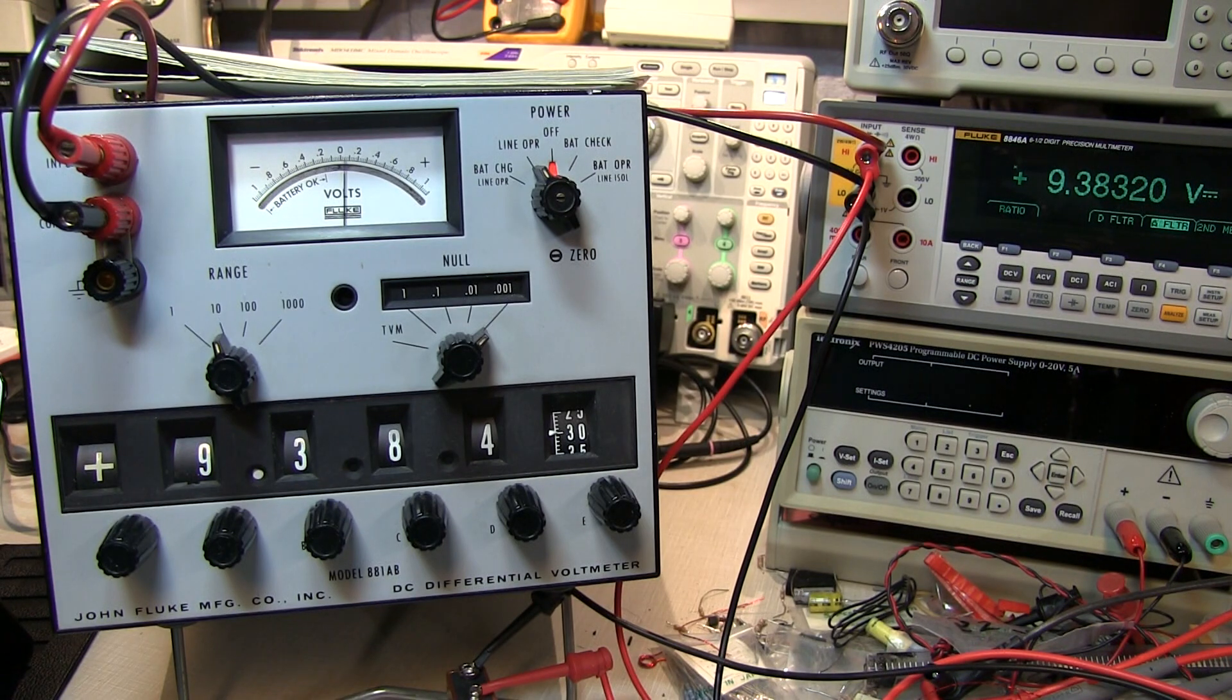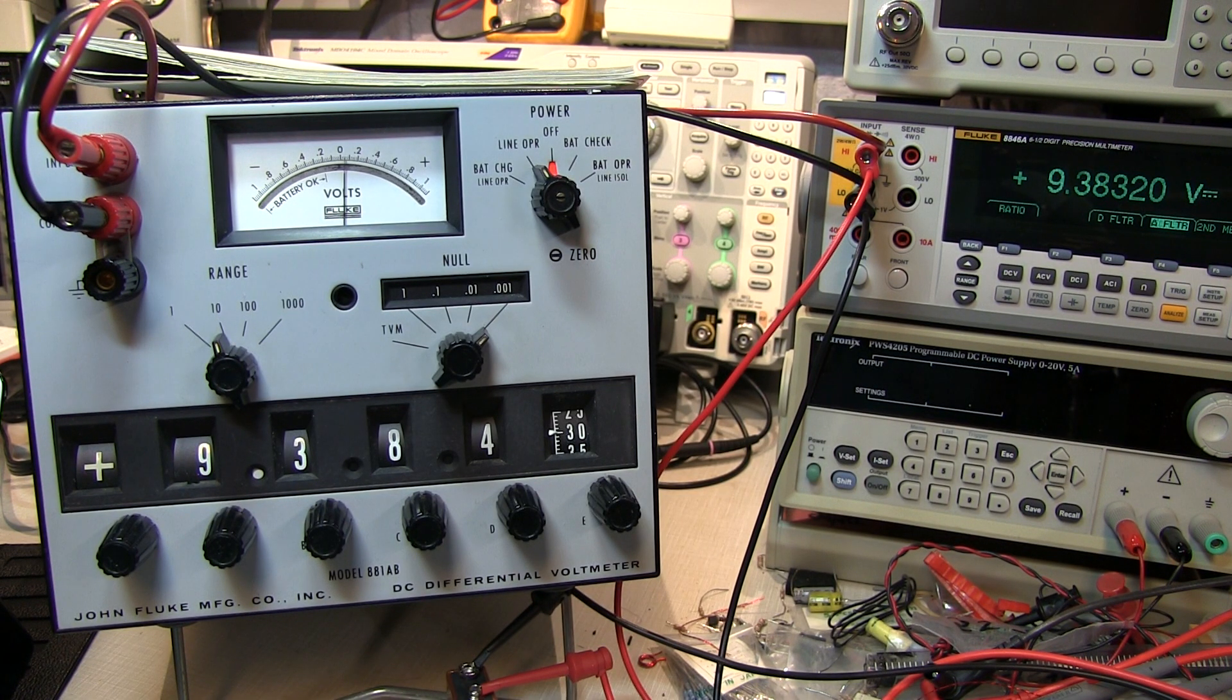Running the about 1.1 to 1.12 millivolt delta through the calculator tells us that we're measuring that voltage to within 0.0012% or so. Given that the specification of this was 0.01%, we're pretty darn close to being in spec even though this instrument probably hasn't been calibrated in 20 or 25 years and it's 50 some odd years old.